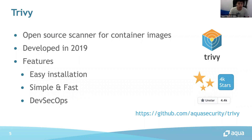Trivy is an open-source scanner for container images. It was developed in 2019, so it's been around about one year, and now Trivy has 4,400 stars on GitHub. Trivy has a bunch of features: easy installation, simple, fast, and DevSecOps-oriented. Trivy can also be easily integrated into your CI system.